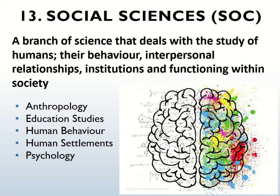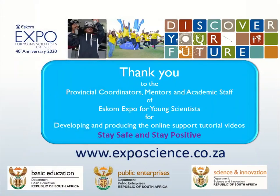For detailed descriptions of the 13 categories and subcategories, you must visit our website at www.exposcience.co.za. Look under the resources tab for templates and materials, all designed to help you do your Expo project. The Expo categories and subcategories can also give you ideas on what to research. We hope this video has helped you understand the 13 categories and their subcategories. The next video will help you identify potential ethics risks in your research and guide you on what procedures to follow.